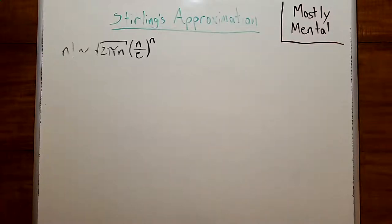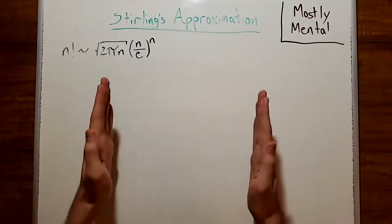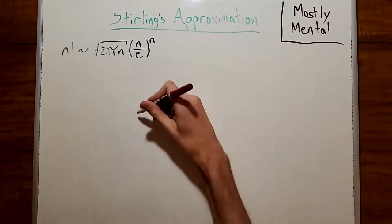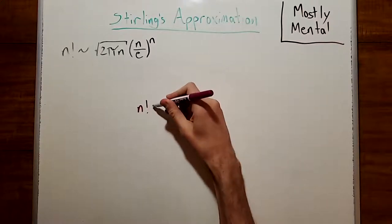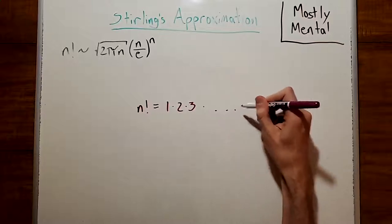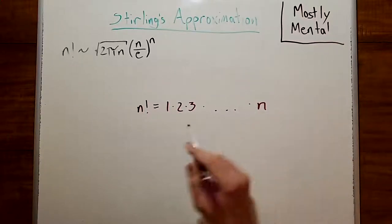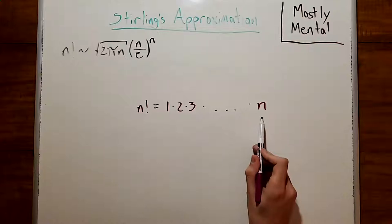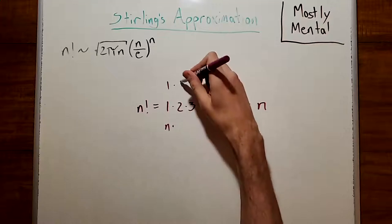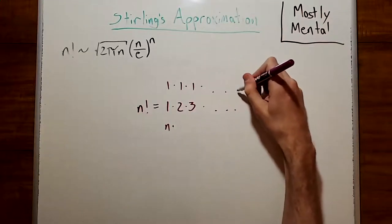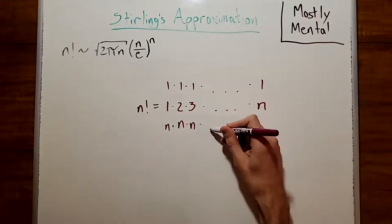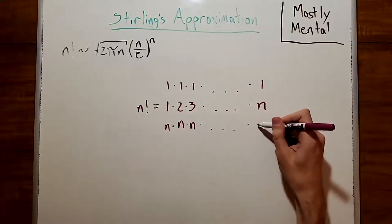A common trick when approximating something complicated is to try to squeeze it in between two easier things. Here, we have n factorial, which is 1 times 2 times 3, and so on, all the way up through n. And notice that each of these terms here is going to fit between 1 and n. And so, if we replace all of these with 1s, we get a lower bound. And if we replace all of them with ns, we get an upper bound.